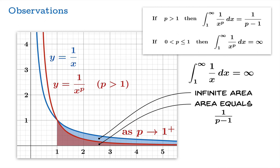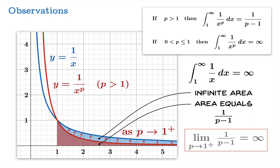One thing to notice is that if we tune p, letting p approach 1 from the right, we push the graph upward towards the reciprocal function, so it encloses more and more area. Indeed, the limiting value of 1 over p minus 1 as p approaches 1 from the right diverges to infinity, which makes perfect sense.